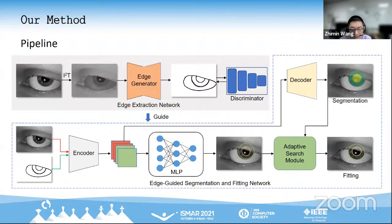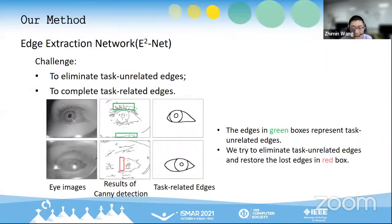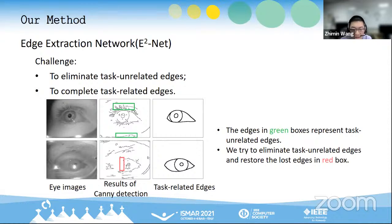We also propose the adaptive search model to search the optimal ellipse parameters with the guidance of the segmentation maps. There are two challenges in task-related edge extraction. First, to eliminate task-unrelated edges — many undesired edges such as eyelashes, glasses, and glands are extracted by standard edge detection methods.